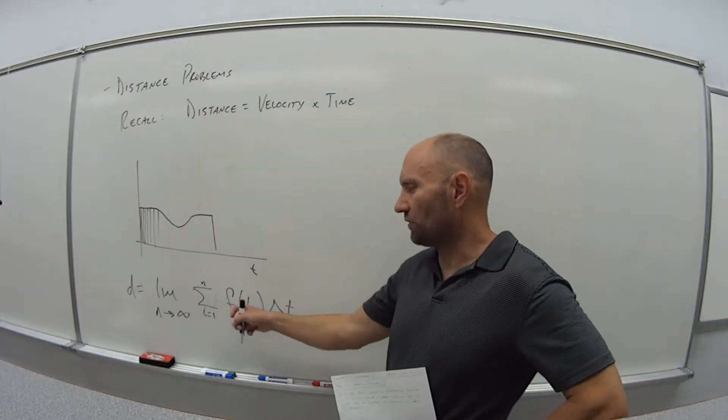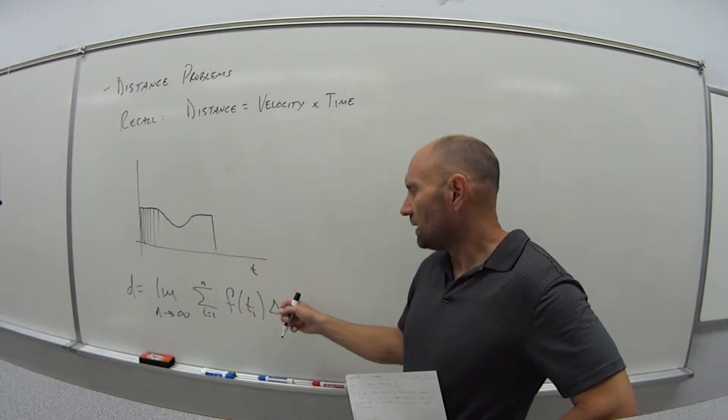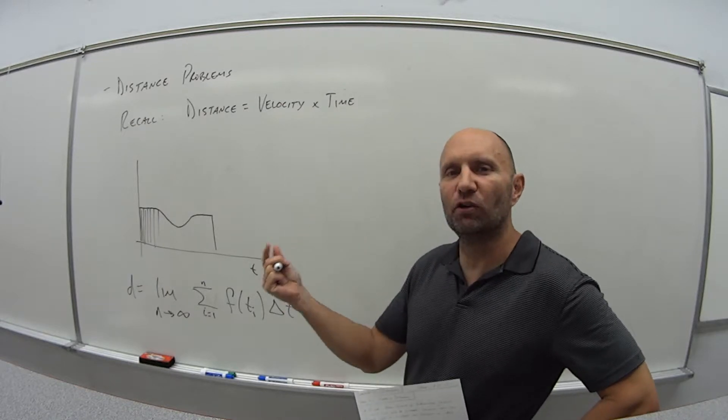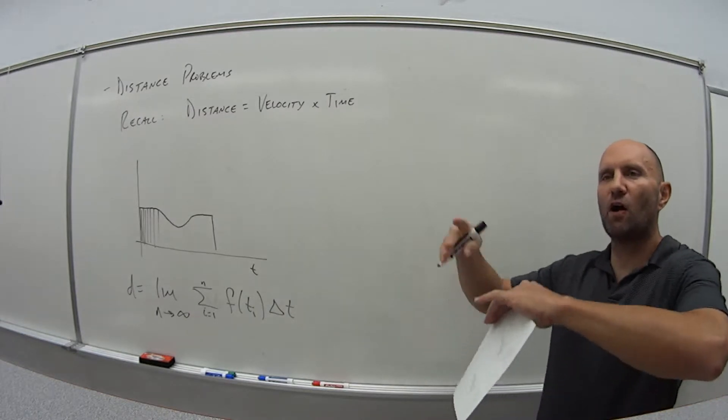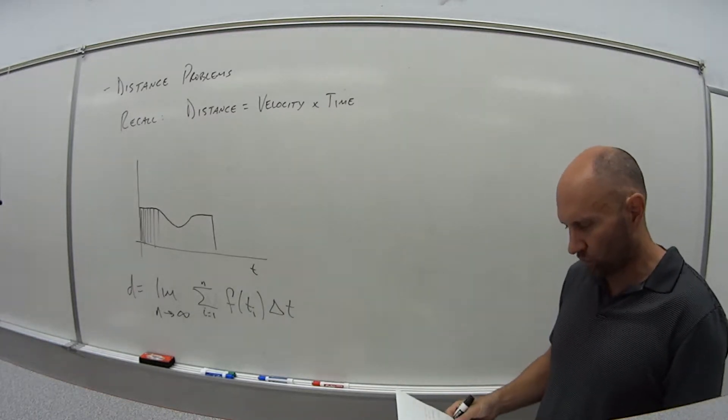So we're taking the function value at a specific time, times by what is the interval of that time, multiply it together, add them all up to find out what's our total distance that was covered.